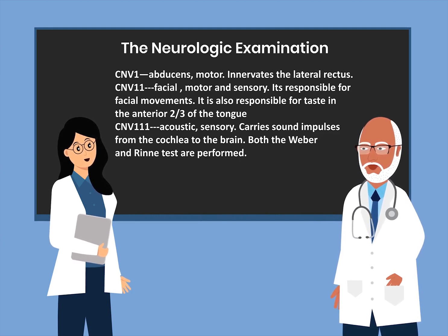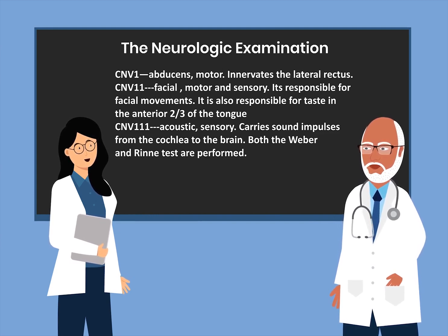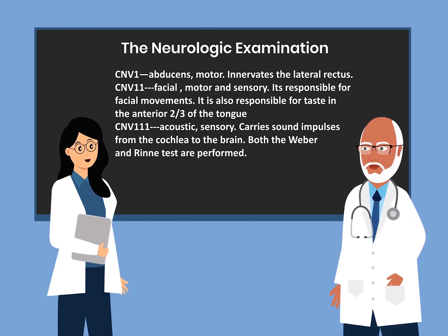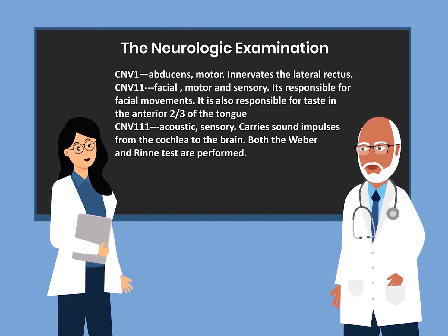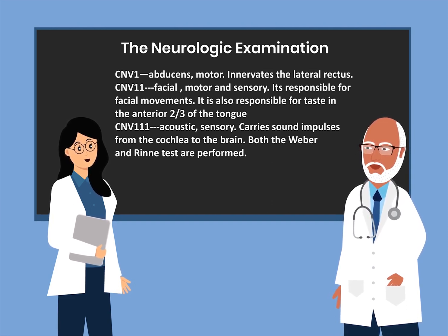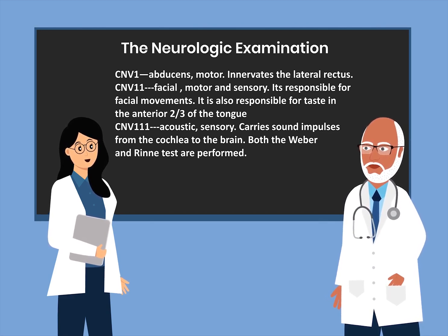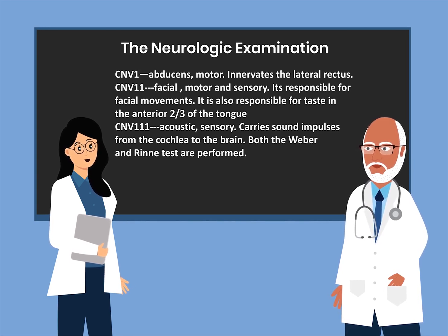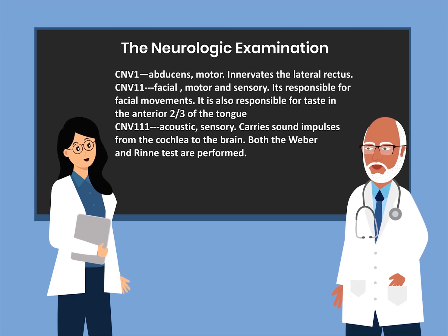Cranial nerve seven is the facial nerve. It is motor and sensory. It is responsible for facial movements and also for taste in the anterior two-thirds of the tongue. Cranial nerve eight is the acoustic. It is sensory and carries sound impulses to the brain. Both Weber and Rinne tests are performed.